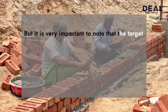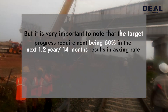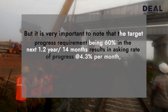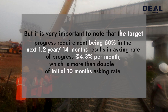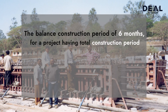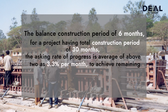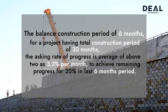It is very important to note that the target progress requirement being 60% in the next 1.2 years or 14 months results in an asking rate of progress of 4.3% per month, which is more than double the initial 10-month asking rate. In the balance construction period of 6 months — for a project having a total construction period of 30 months — the asking rate of progress is approximately 3.3% per month to achieve the remaining 20% progress in the last 6 months.